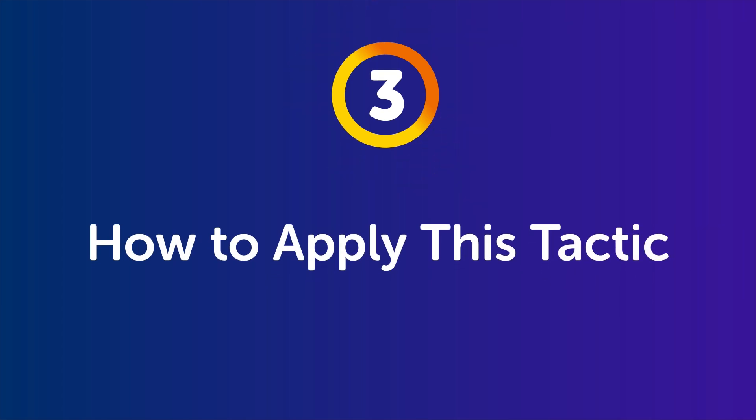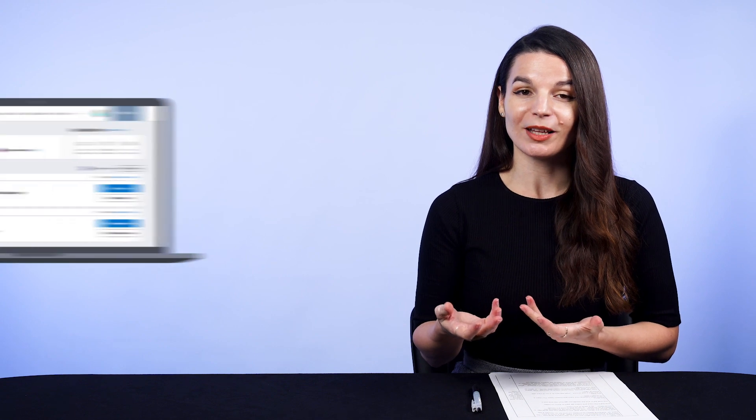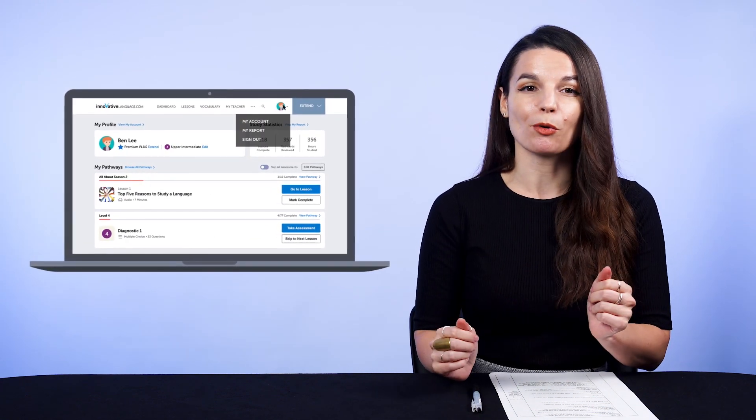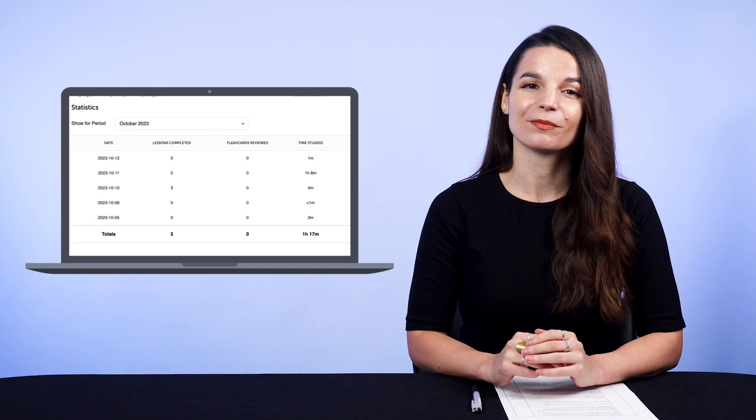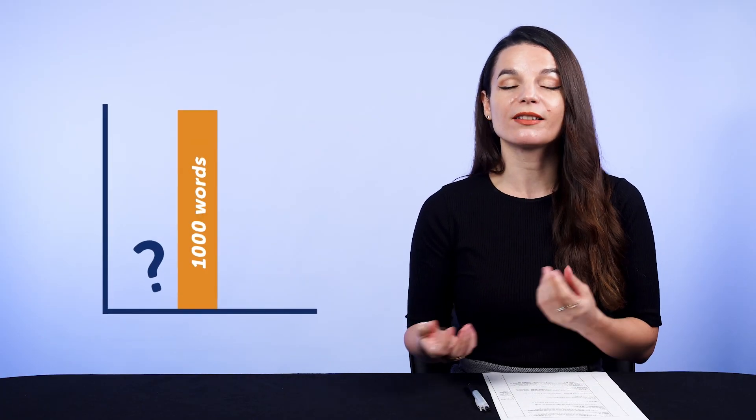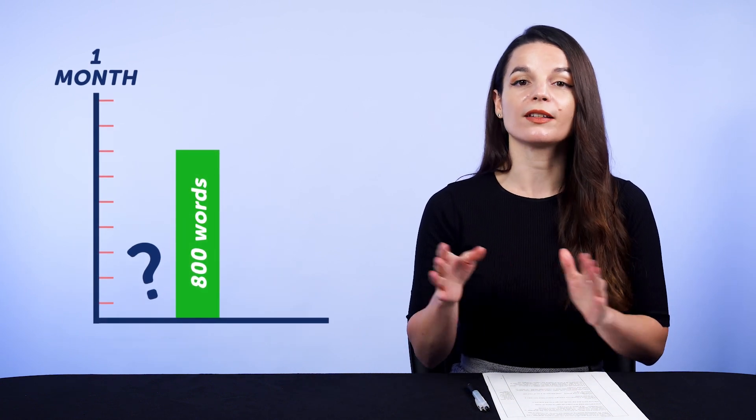How do you apply this to your language learning? Part 3: how to apply this tactic. Just measure your input — the time you study. Set small, measurable monthly goals and outline your daily routines to get an idea of how much time you put in. Our learning system also tracks the time you study — visit My Report under the Account drop-down menu to see lessons completed, flashcards reviewed, and time studied. Next, measure your results, your output. Whether it's a journal, texting your teacher, writing comments on lessons, or having conversations, you have to have that output and measure it. If your goal is to learn 1,000 words in one month but you only learned 800, then you know that with your current input, 800 words per month is a realistic number.